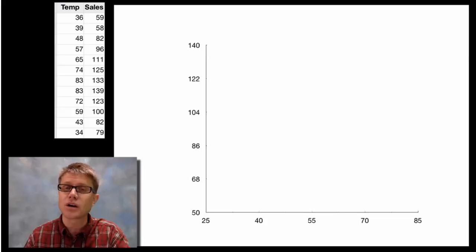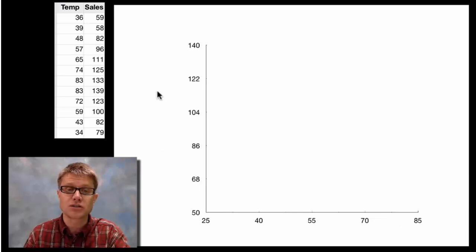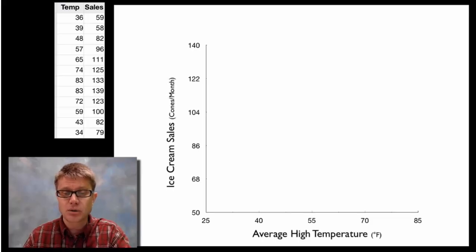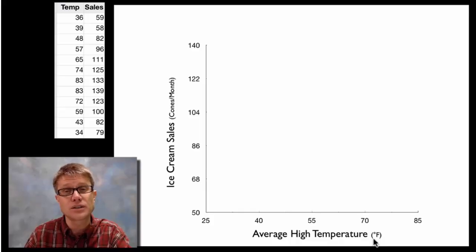First thing you want to do is you want to figure out where your axes are going to be. I'm going to put along the x-axis the temperature, and then I'm going to put my ice cream sales on the y. Next thing I want to do is I want to have a title for each of those. So I'm going to put average high temperature along the bottom. Notice that I put in parentheses the units that I'm measuring it in. And then I'm going to put ice cream sales on the y-axis, and I'm going to put the units that I measure that on as well.